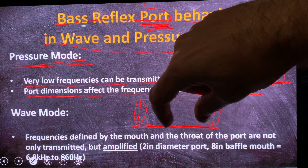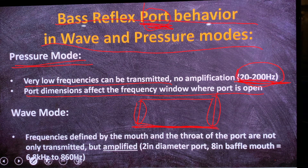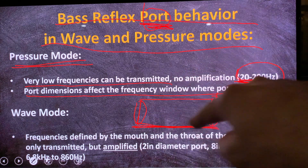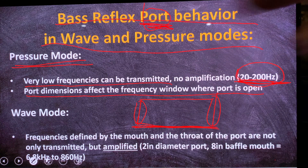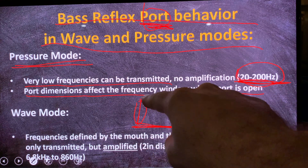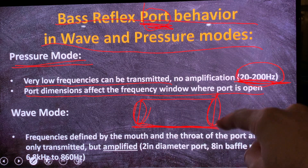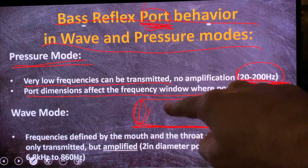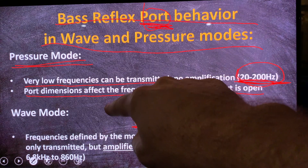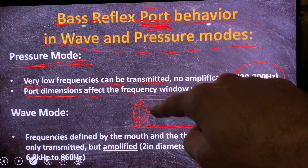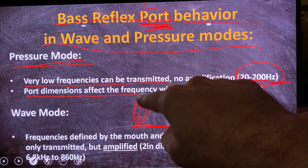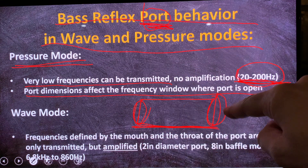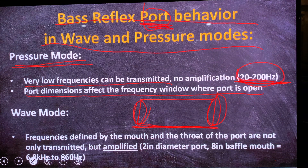The amount of amplification given to the sound is determined by the length of your port. If you make your port longer, you amplify those frequencies between throat and mouth more and more, getting greater dB of amplification. However, in pressure mode the laws are different — the frequencies being transmitted are way lower, an order of magnitude lower or even more.